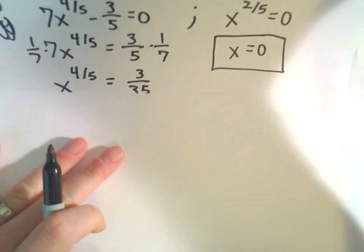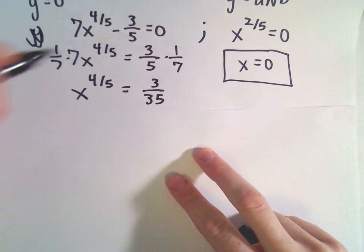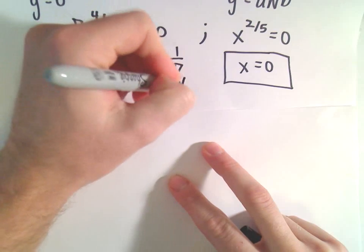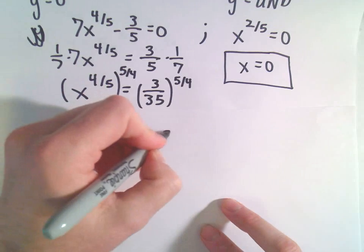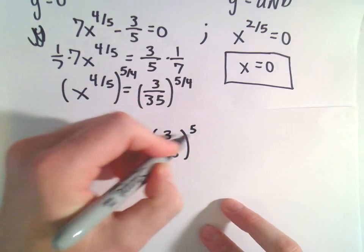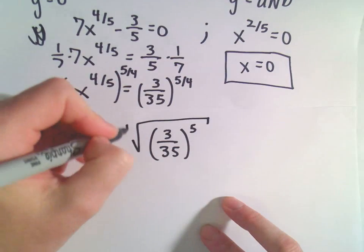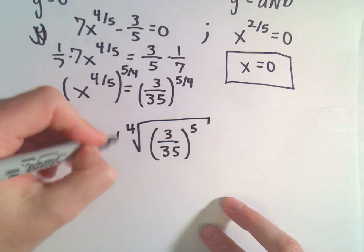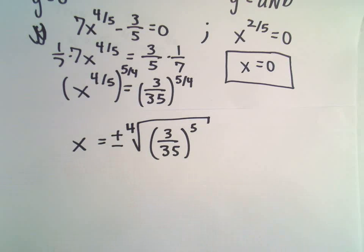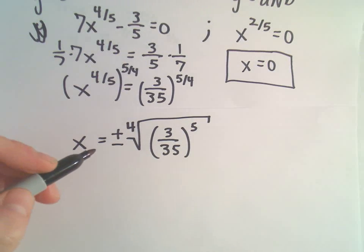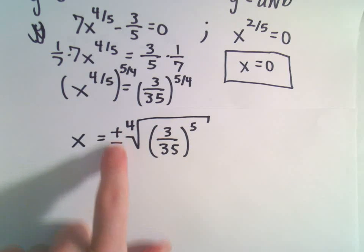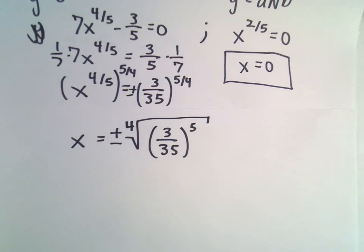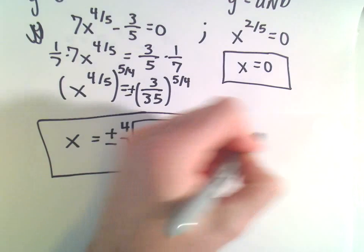To get rid of the 4/5 power, I'll raise both sides to the 5/4 power. On the left we get x. We have to be careful here — we're taking the fourth root of 3/35 raised to the 5th power, and since we're taking an even-powered root, we get both positive and negative solutions. So our other critical numbers are plus and minus the fourth root of (3/35) to the 5th, along with x equals 0.